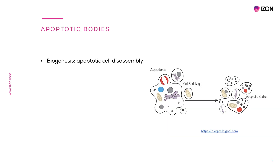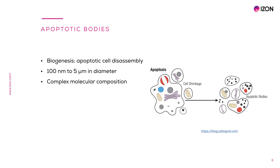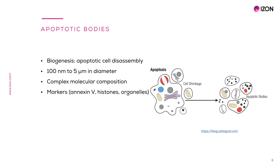Apoptotic bodies are EVs specifically generated through apoptotic cell disassembling. They are large EVs, typically 100 nanometers to 5 microns in diameter. Apoptotic bodies can harbor DNA, RNA and proteins, and therefore can mediate intercellular communication through the transport of these biomolecules and may contribute to the development of various disease states. There are some markers that can help identify apoptotic bodies, like histones, NXNV and the presence of organelles.